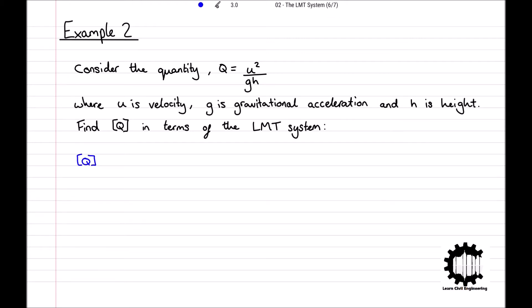The dimensions of Q are equal to the dimensions of velocity squared, divided by the dimensions of gravity times the dimensions of height. As we used above, the dimensions for velocity are LT to the power of minus 1.